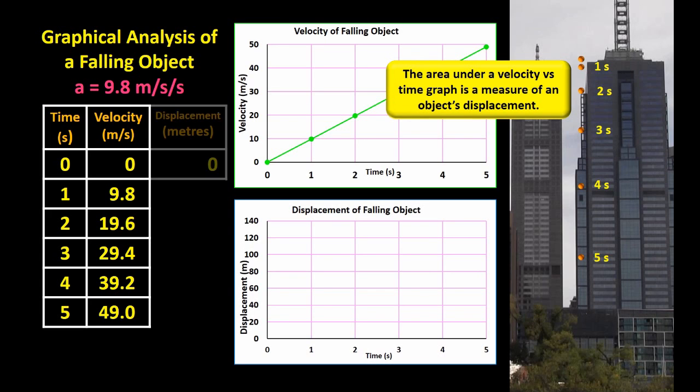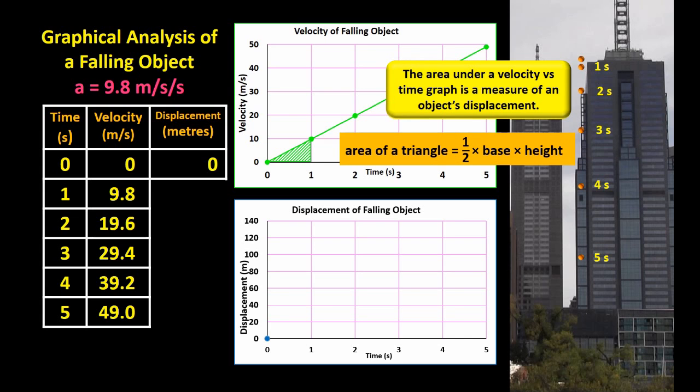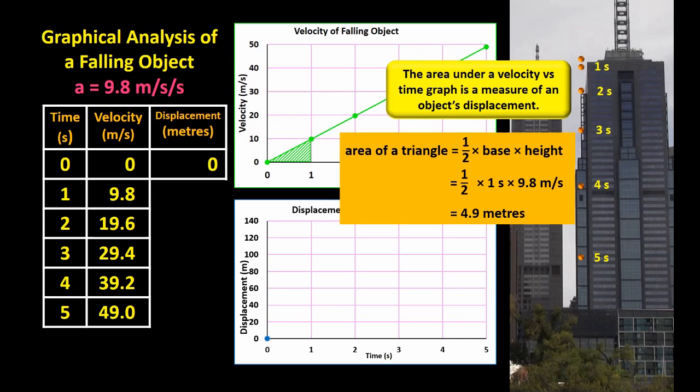At the beginning, the displacement was zero of course. So our first dot goes here. By calculating the area under the velocity versus time graph up to the one second mark, we can work out the ball's displacement after one second. The area is half base times height, which equals 4.9 meters.